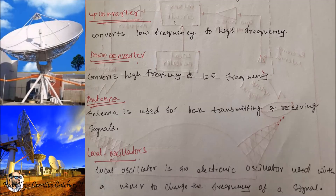The main purpose of the up converter and down converter is to convert a low frequency signal to a high frequency signal in order to communicate with satellites, and when the signal is received from the satellite, the high frequency signal is converted back to low frequency so the Earth Station can process the required inputs. That is why we add or mix in a local oscillator, which is an electronic oscillator that keeps generating signals according to the required purpose.